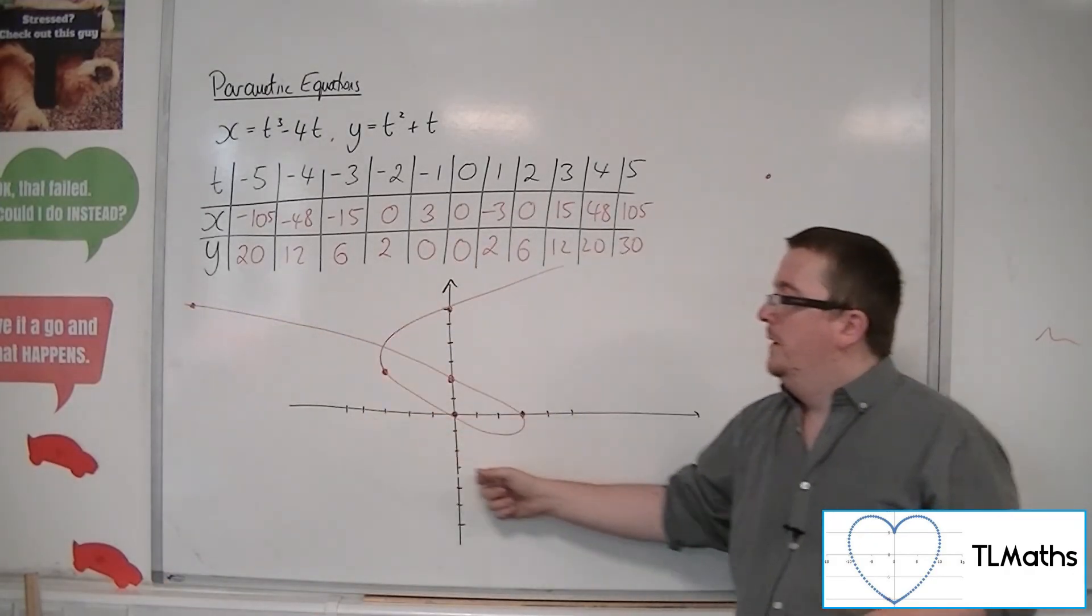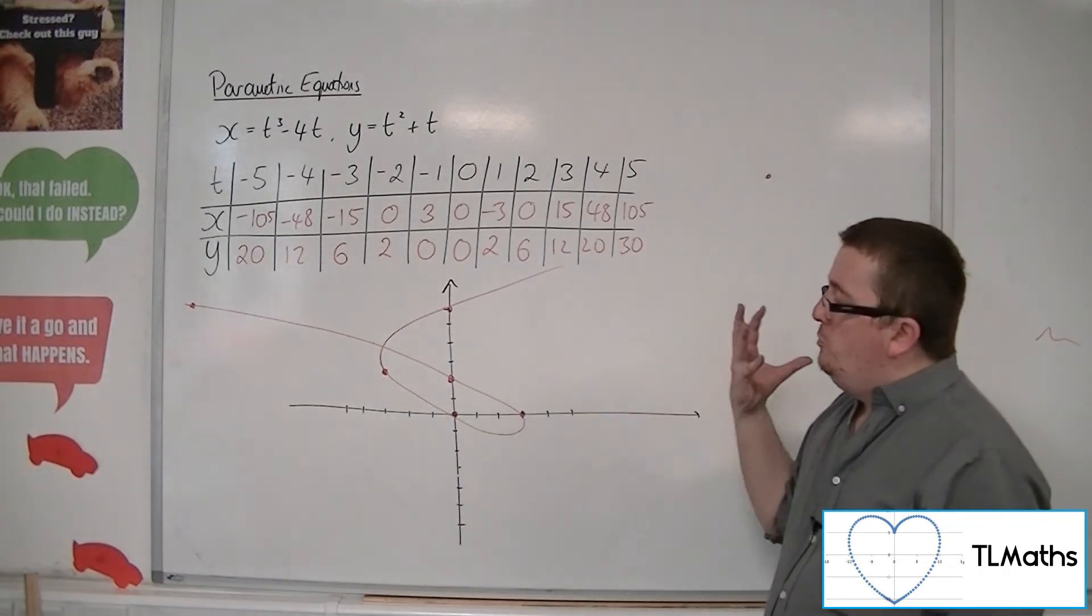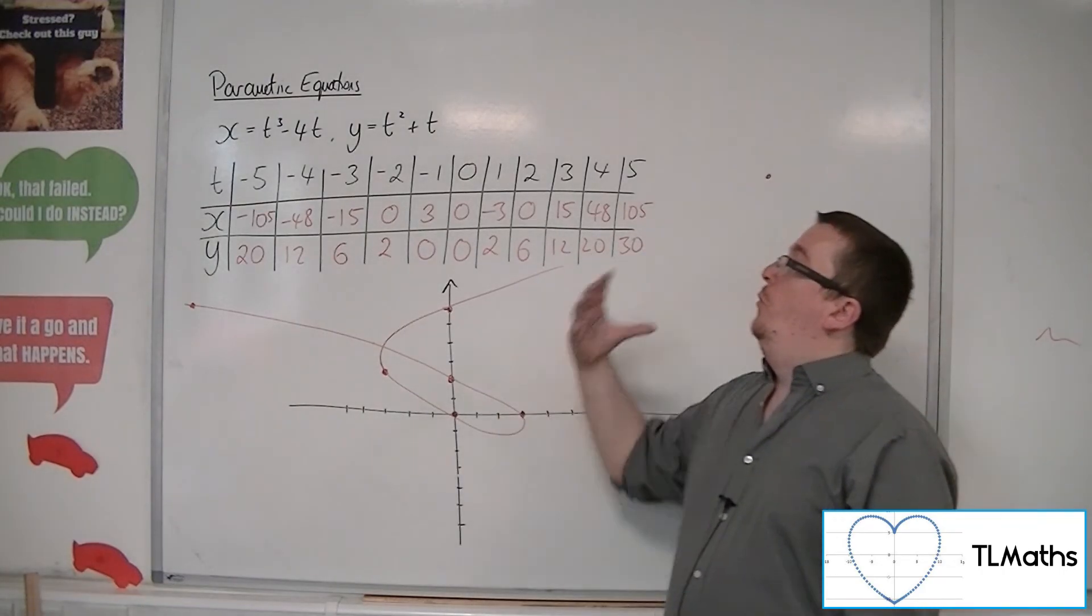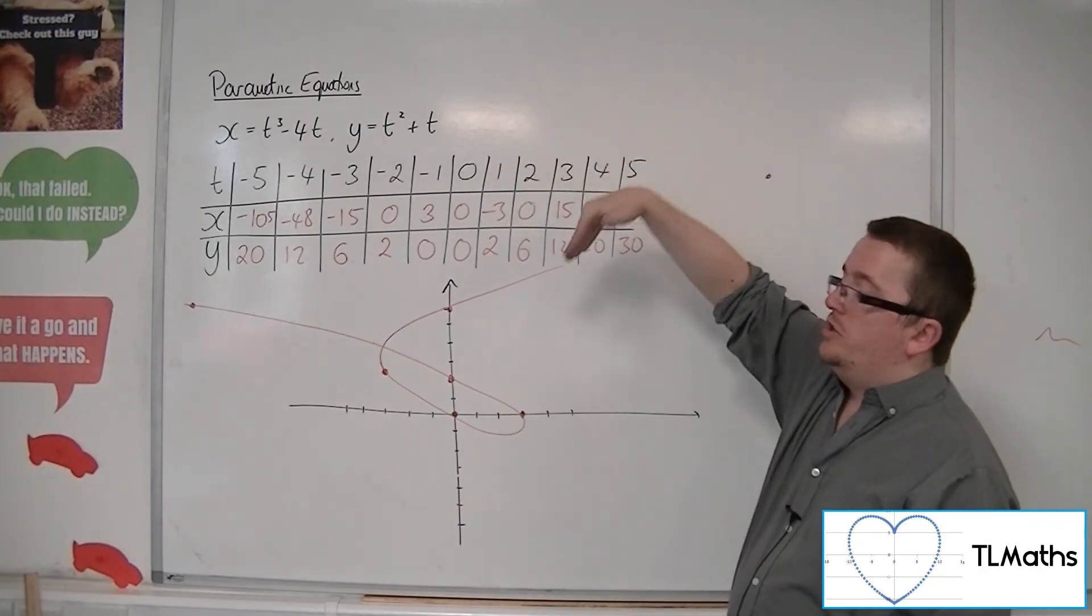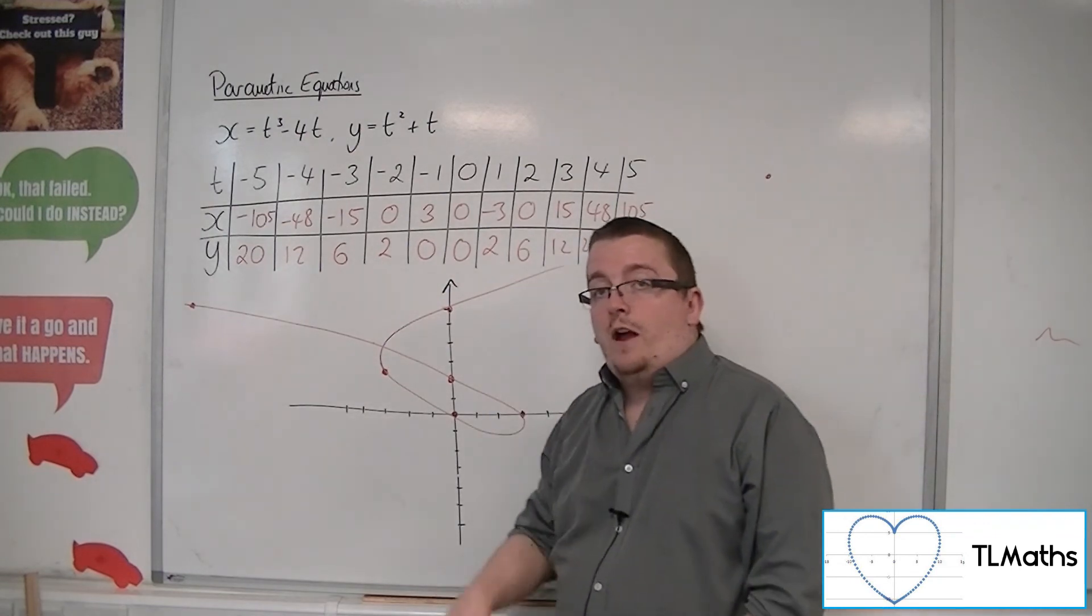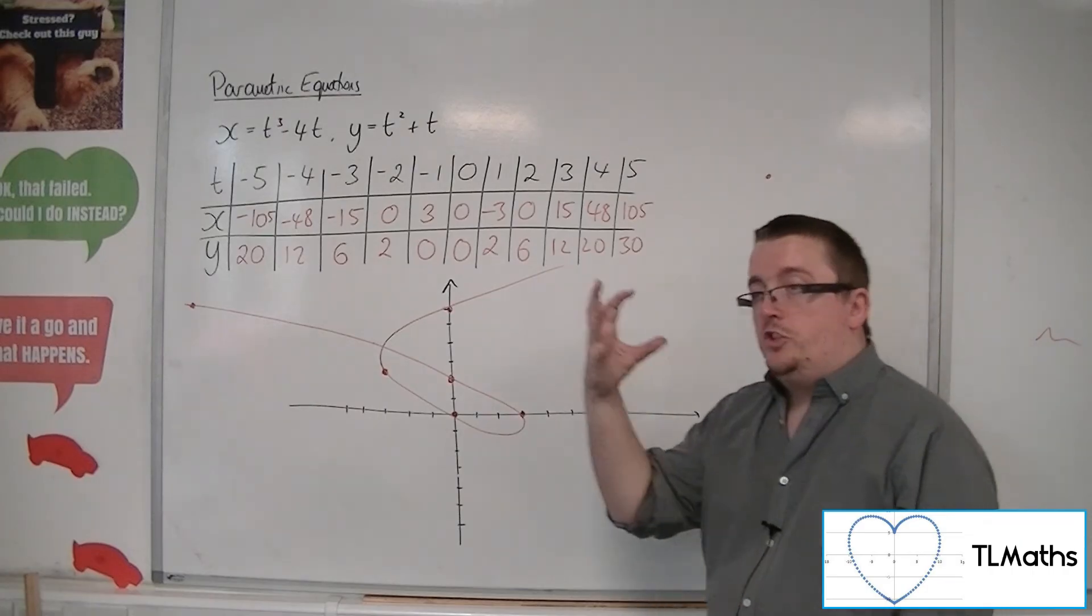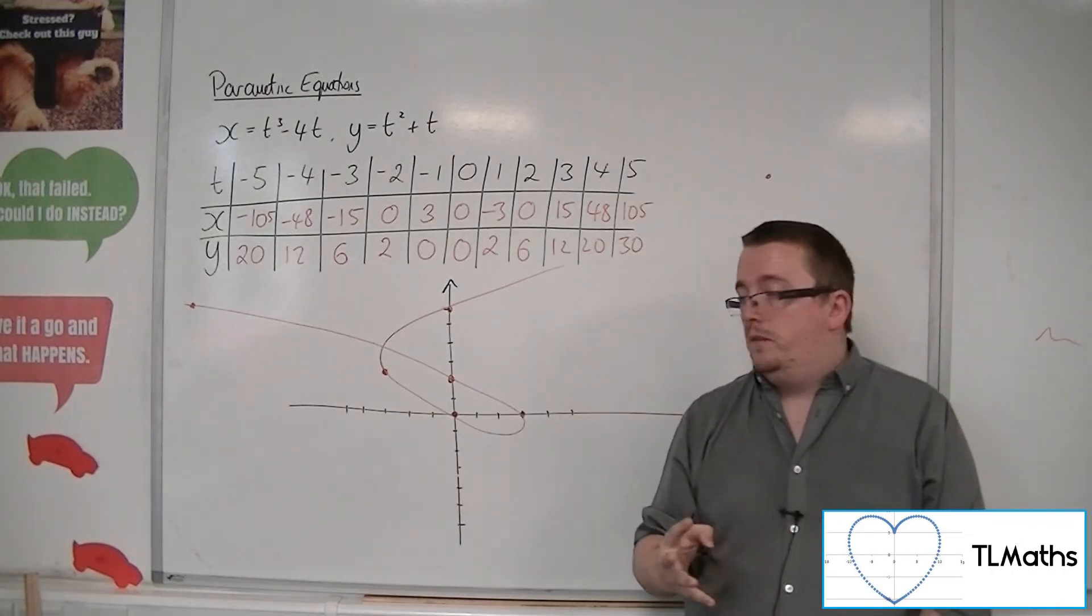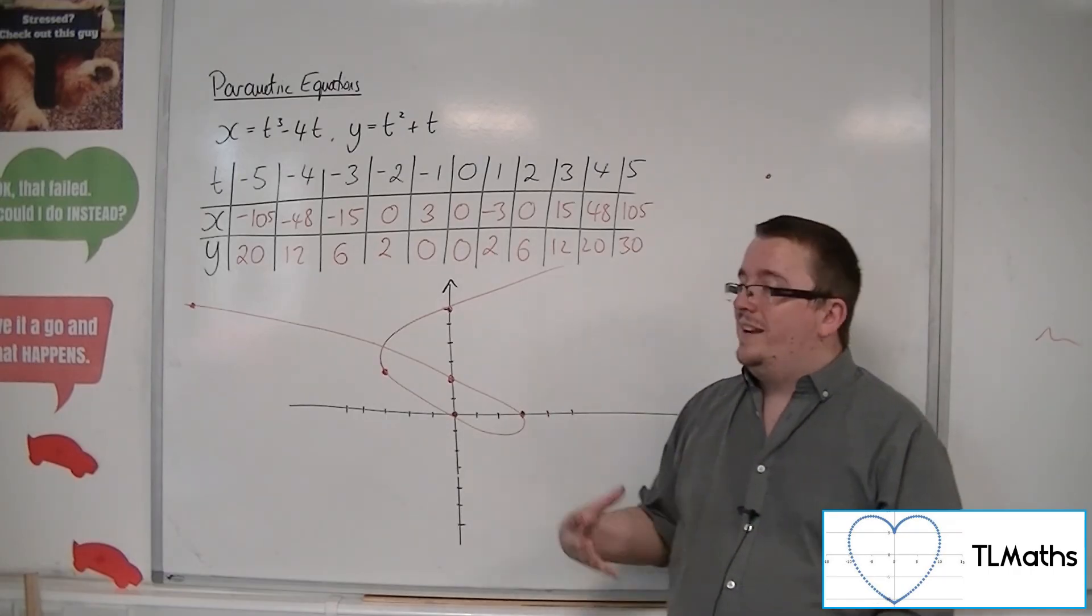So you can get some quite unique behaviour, whereas you could never get a Cartesian equation to do this. To cross itself without having some form of piecemeal, one equation doing this bit, one equation doing this bit. You wouldn't be able to do it otherwise. But parametric equations allow you to do that.